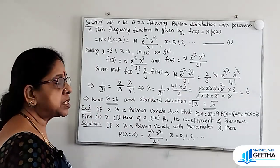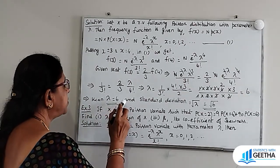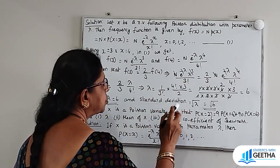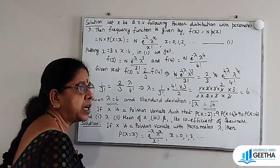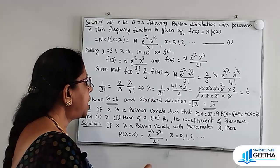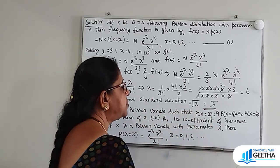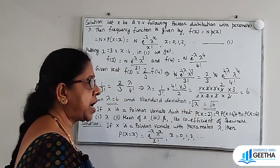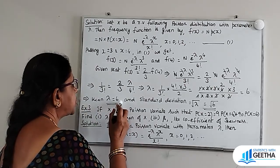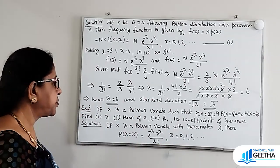Therefore, mean lambda is equal to 6. The mean of the Poisson distribution is lambda, so mean = 6. The variance is lambda and standard deviation is root lambda, that is root of 6. So the answer is mean = 6 and standard deviation = √6.